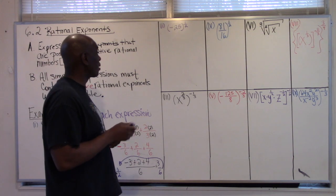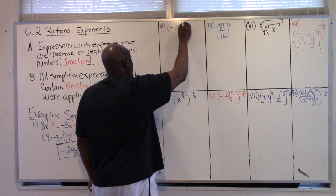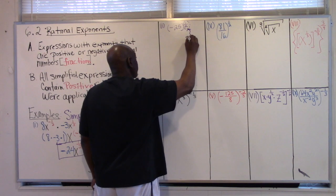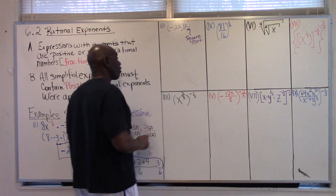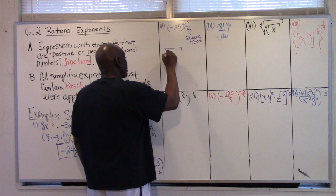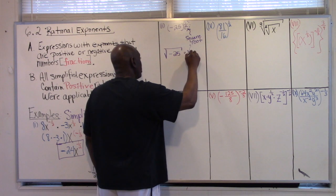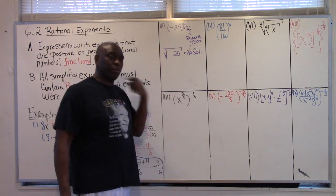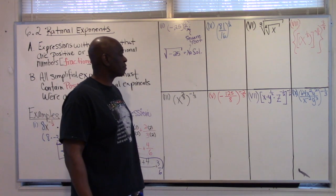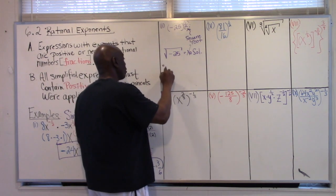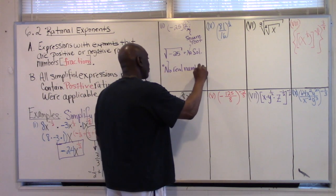Example number 2: we know that the power one-half means square root. So we're going to have the square root of negative 25. We said that this is no real number solution.